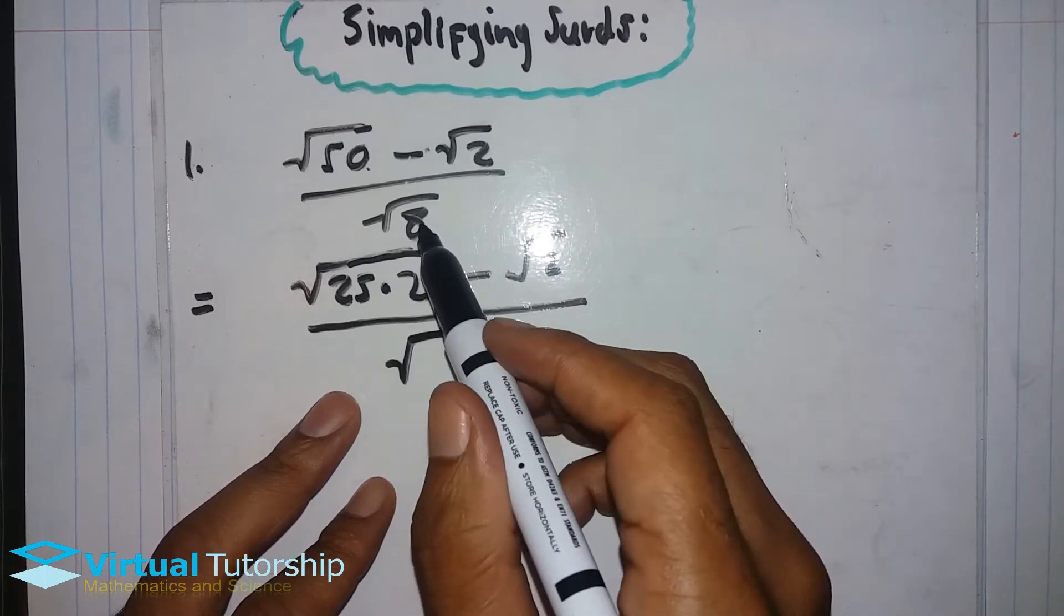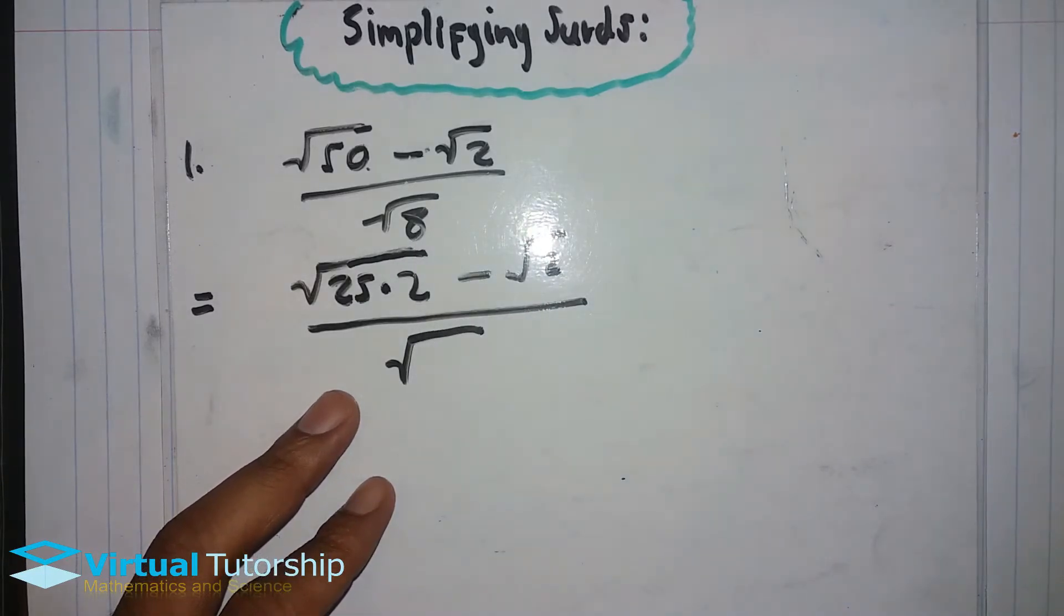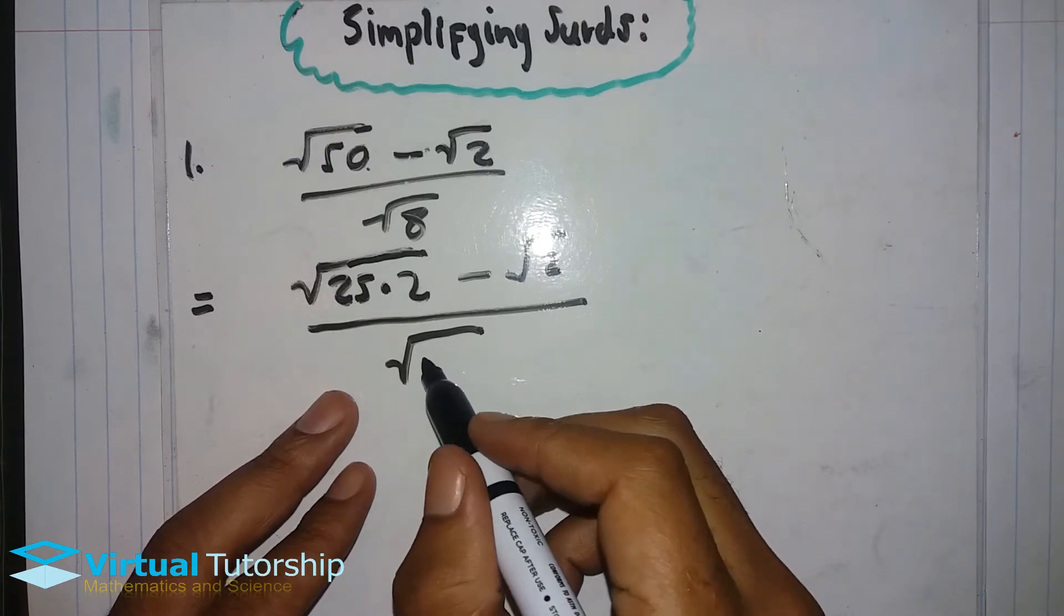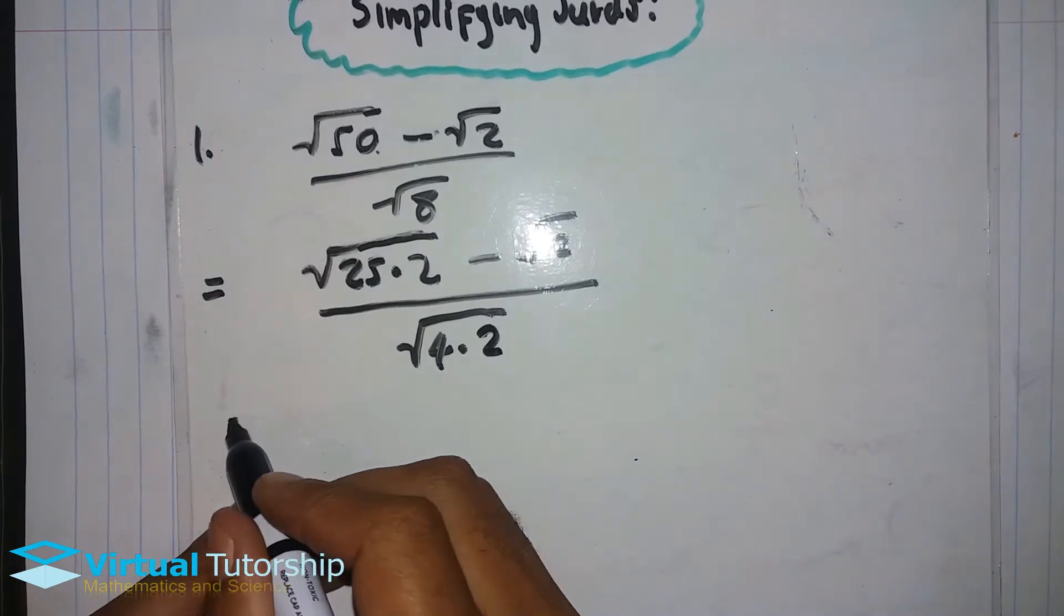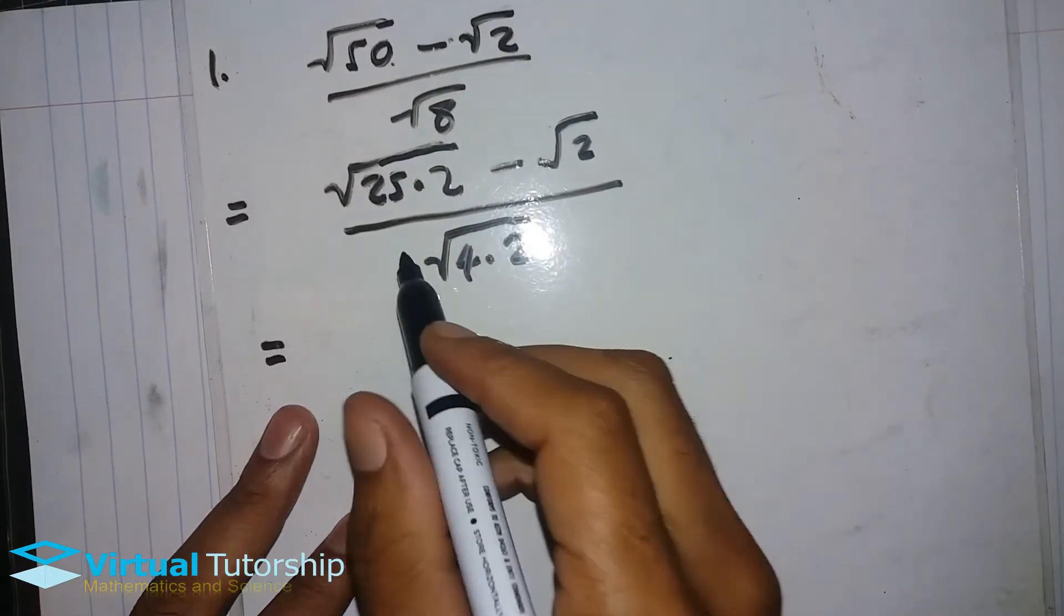So square root of 8, 8 is not a prime number. So rewrite it as 4, a perfect square, times 2, a prime.